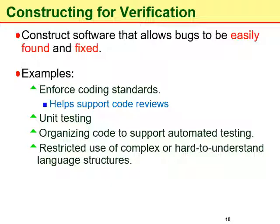Then, constructing for verification means building software in such a way that errors can be readily found by the software engineers who are working with the code, as well as by the testers and users during testing and operational activities. This can be achieved, for example, by enforcing coding standards to support code reviews, through unit testing, organizing code to support automated testing, and by restricting the use of complex or hard-to-understand language structures.